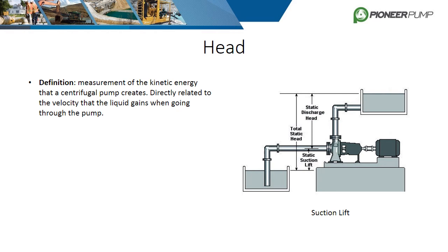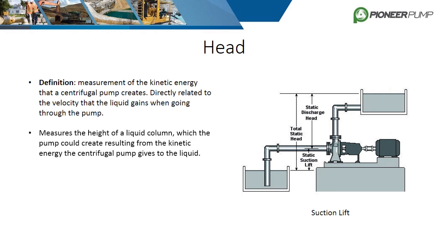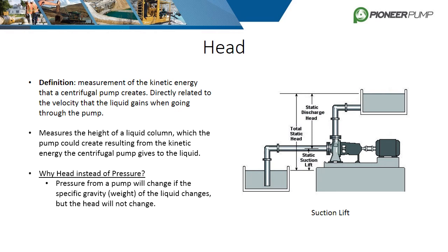The term most commonly heard and critical to understand in the pump industry is head. Head is the measurement of the kinetic energy a centrifugal pump creates, directly related to the velocity that the liquid gains when traveling through the pump. It literally is the measurement of the height of a liquid column shot straight up from the volute discharge. The term head is used in place of basic pressure because the pressure will change if the specific gravity of a liquid changes, but the head will not. To get head from psi, multiply psi by 2.31 and divide the product by the specific gravity of the fluid. Total static head is the distance between the surface of the fluid on the suction side to the fluid surface on the discharge side — those surfaces are where atmospheric pressure is acting. Pipes or hoses introduce many other factors including friction and entrance losses, but all of these can be described in terms of head, and all head terms are added together to get the total dynamic head of the system.